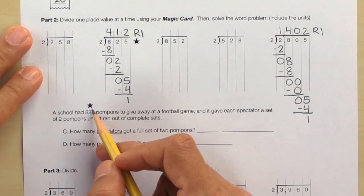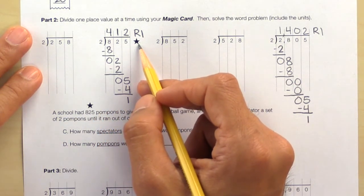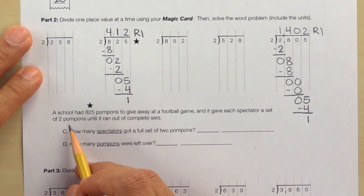Let's take a look at the word problem in part 2 in which students have to interpret the meaning of the quotient including the remainder. This star provides a hint that this word problem is related to this division problem here. So let's go ahead and read it. A school has 825 pom-poms to give away at a football game and it gave each spectator a set of 2 pom-poms until it ran out of complete sets. Let's answer the questions.